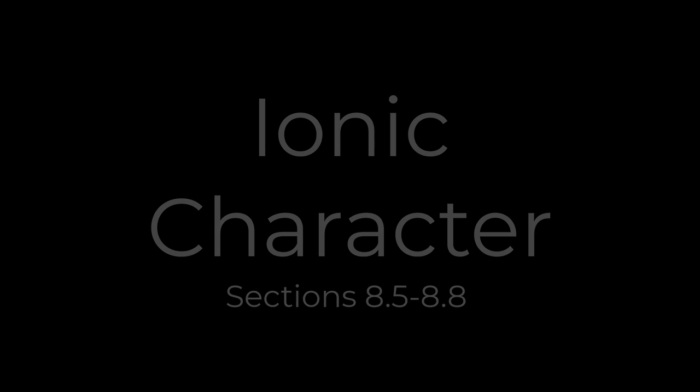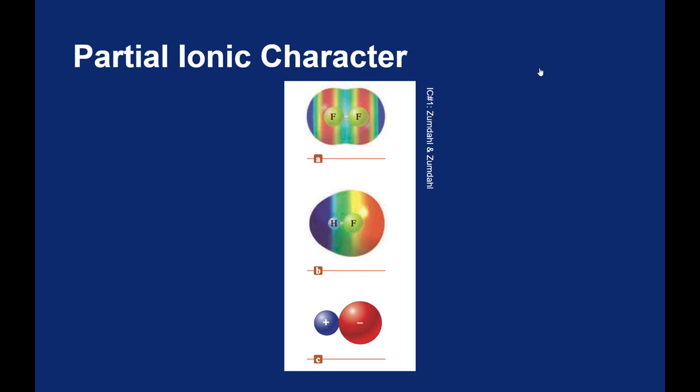When we discussed bonding earlier, we used electronegativity to figure out if a bond was non-polar covalent, polar covalent, or ionic. We said we can put bonds into those nice, neat categories, but in reality it's kind of a sliding scale, where you can consider a bond being more or less covalent or more or less ionic. A purely covalent bond would have very little properties of an ionic bond, and a fully ionic bond would have very little of the properties of a covalent bond. A polar covalent bond would be kind of in the middle, with some characteristics of each.